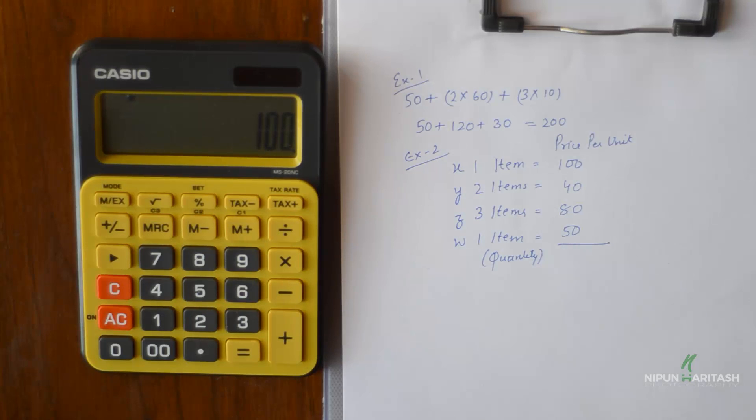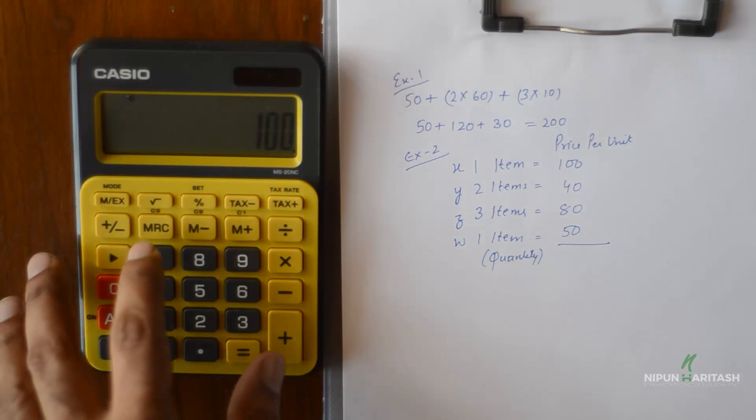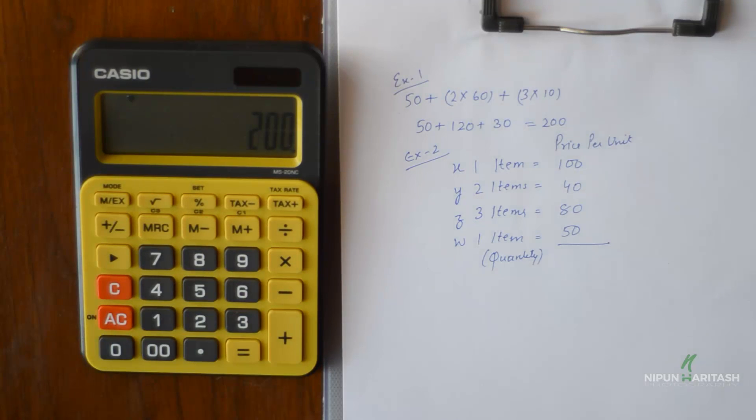So if you check MRC now it is 200. In other words, you can say that M+ helps you in eliminating the usage of parenthesis or brackets in a calculation.